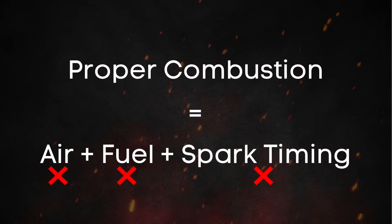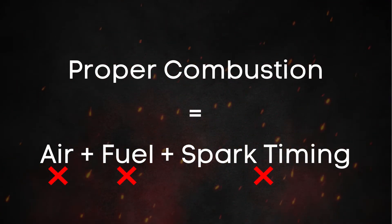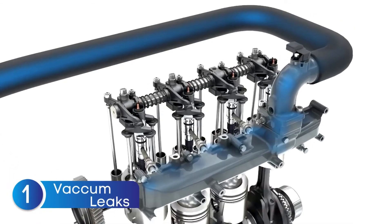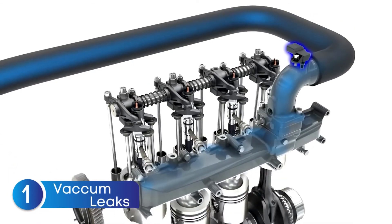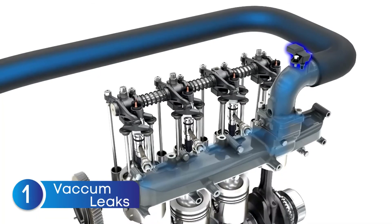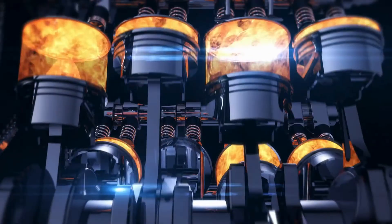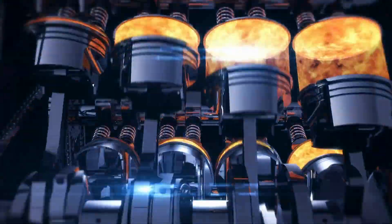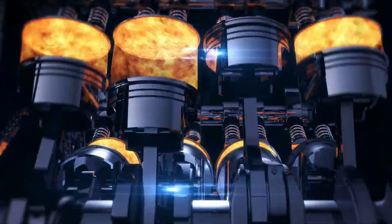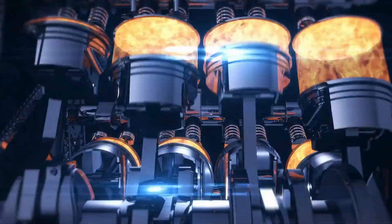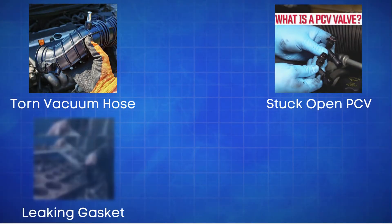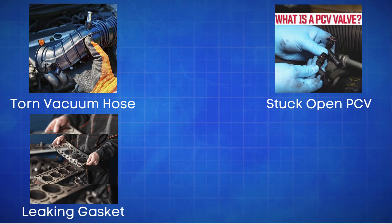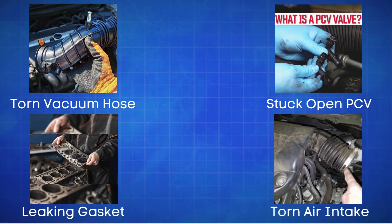Let's dive into some factors that can affect the air, fuel, or spark. First up, vacuum leaks. A vacuum leak allows unmetered air to enter the engine. This extra air throws off the air-fuel ratio, causing the mixture to run too lean, which leads to misfires. Some common locations for vacuum leaks include a torn vacuum hose, a stuck-open PCV valve, a leaking intake manifold gasket, or anything torn in the air intake system after the MAP sensor.